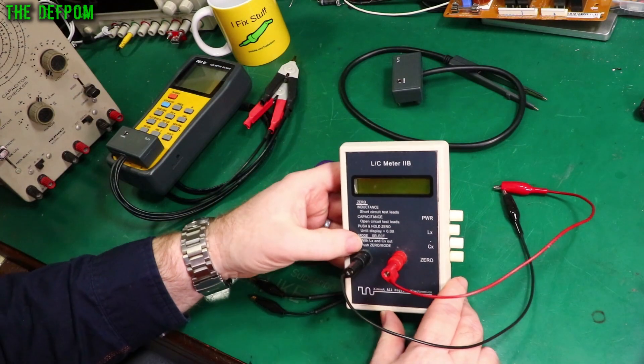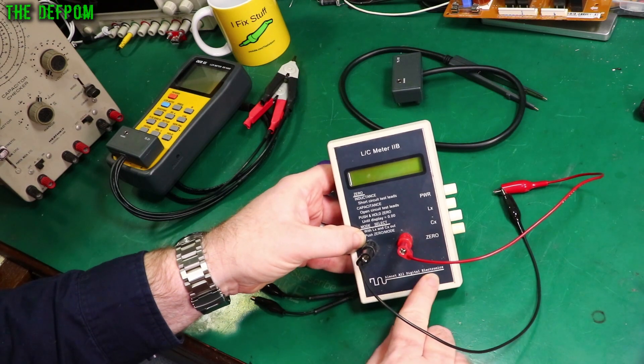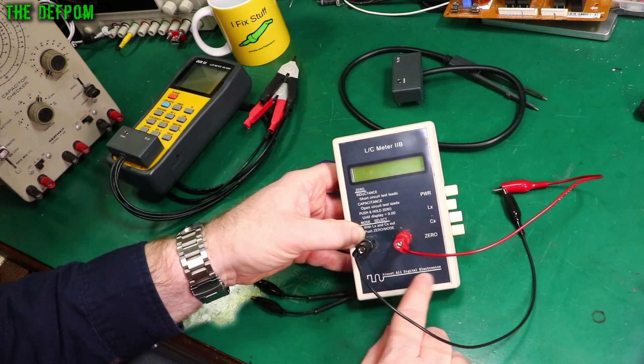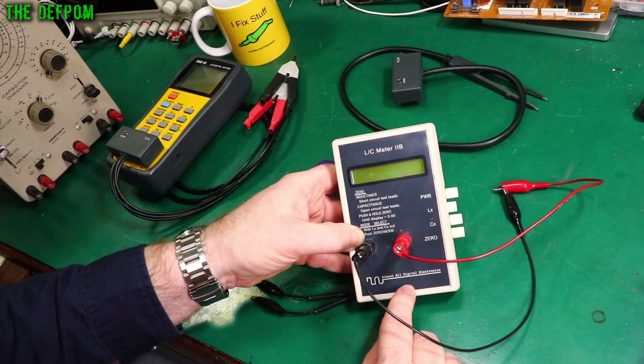Here is an LC meter. It doesn't do resistance, does inductance and capacitance. This is by Almost All Digital Electronics. Unfortunately the guy which made these, he died a dozen years ago now unfortunately. He seemed to be quite a talented guy.